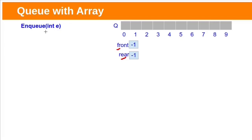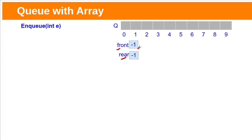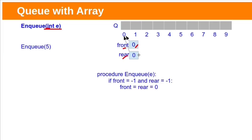If we want to add one element to the queue, we will use the Enqueue function. Enqueue function has one parameter. First we need to increment both Front and Rear — previously they were at minus 1, after increment they will be at index 0. So if Front equals minus 1 and Rear equals minus 1, we increment both Front and Rear, then add the element to the queue at the Rear index. Here we passed argument 5, which will be added to the queue at Rear index 0. We add the element e to the queue at Rear.